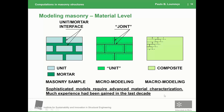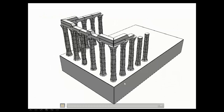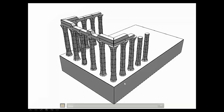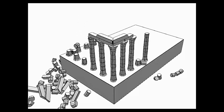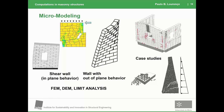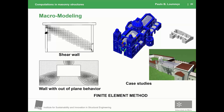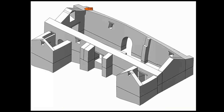When we talk about modeling and computation, traditionally we talk about two different approaches, which have been stabilized and used for several decades. We normally talk about micro-modeling, where the units are modeled separately — units and joints modeled in separate ways. This can be used in large-scale buildings but is not normally the case because it is very time-consuming and complex. This is an example of a UNESCO heritage site in the south of Portugal, a Roman temple, subjected to an earthquake. Or you can have an approach where we assume the material is homogeneous, either isotropic or anisotropic.